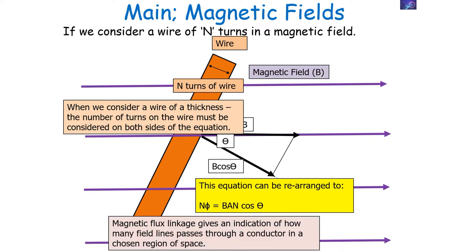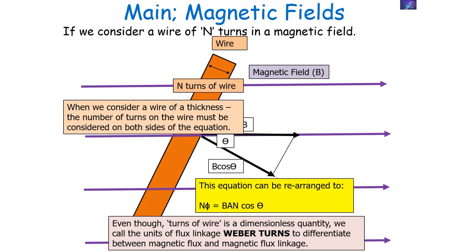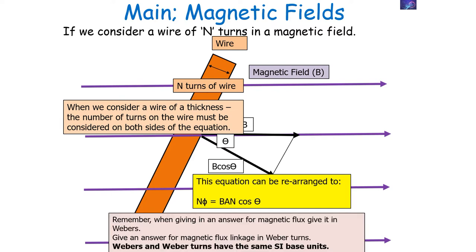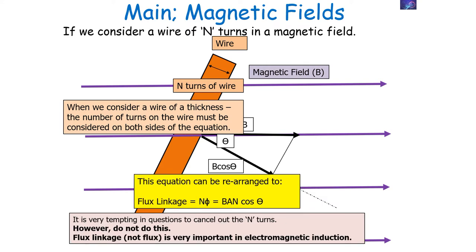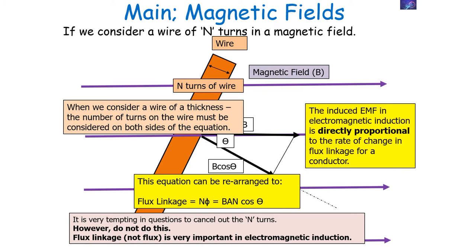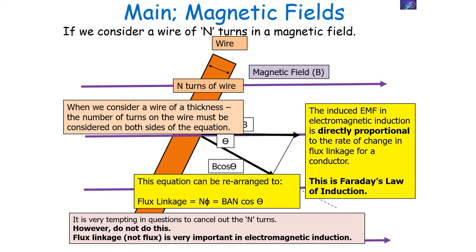Magnetic flux linkage gives an indication of how many field lines pass through a conductor in a chosen region of space. Even though turns of wire is a dimensionless quantity, we call the units of flux linkage Weber-turns to differentiate between magnetic flux and magnetic flux linkage. Webers and Weber-turns have the same SI base units because the number of turns has no SI unit. In the equation N phi equals BAN cos theta, it is tempting to cancel N on both sides, but we don't, because flux linkage is crucial in electromagnetic induction — the induced EMF is directly proportional to the rate of change of flux linkage, which is Faraday's law of induction.